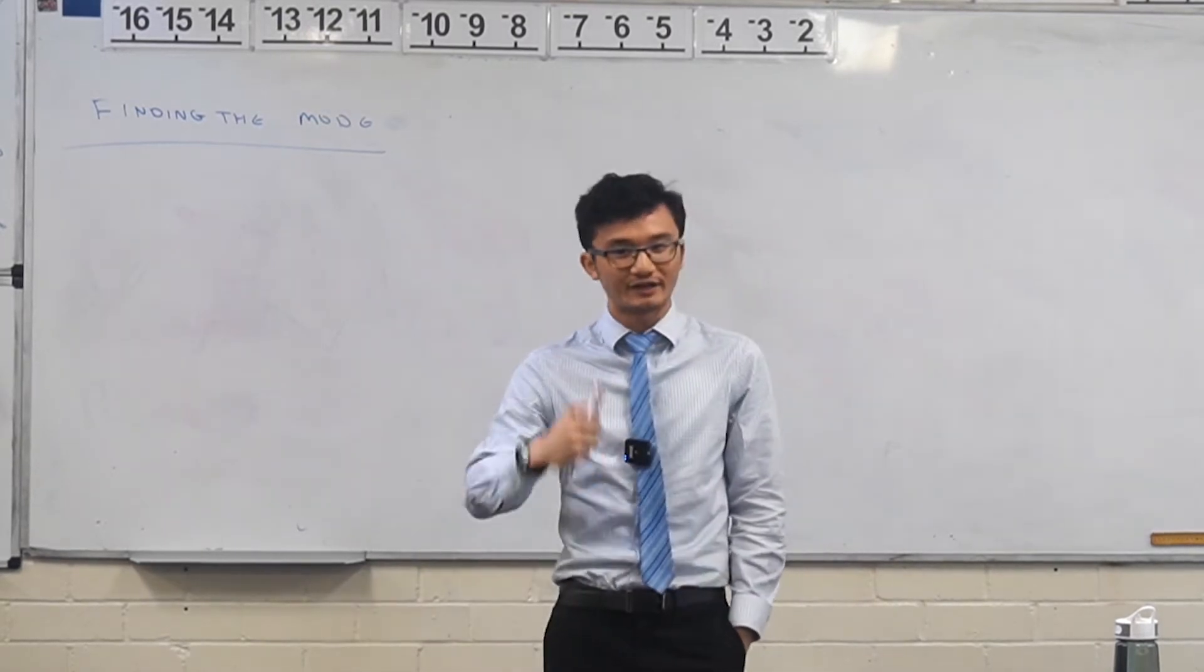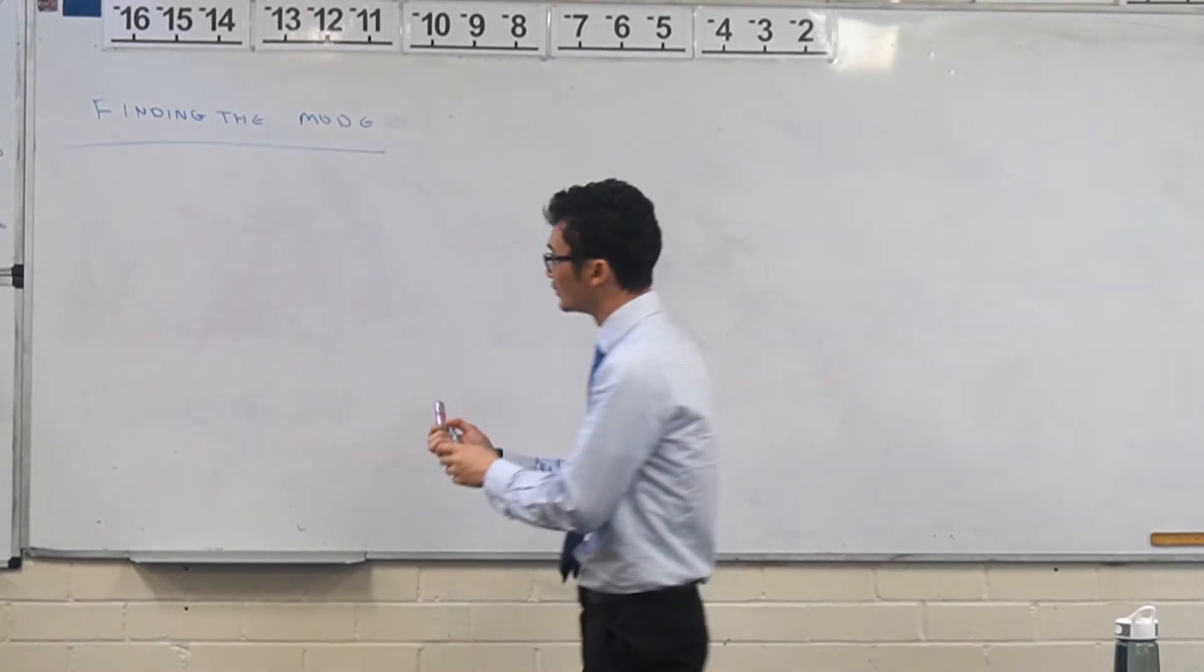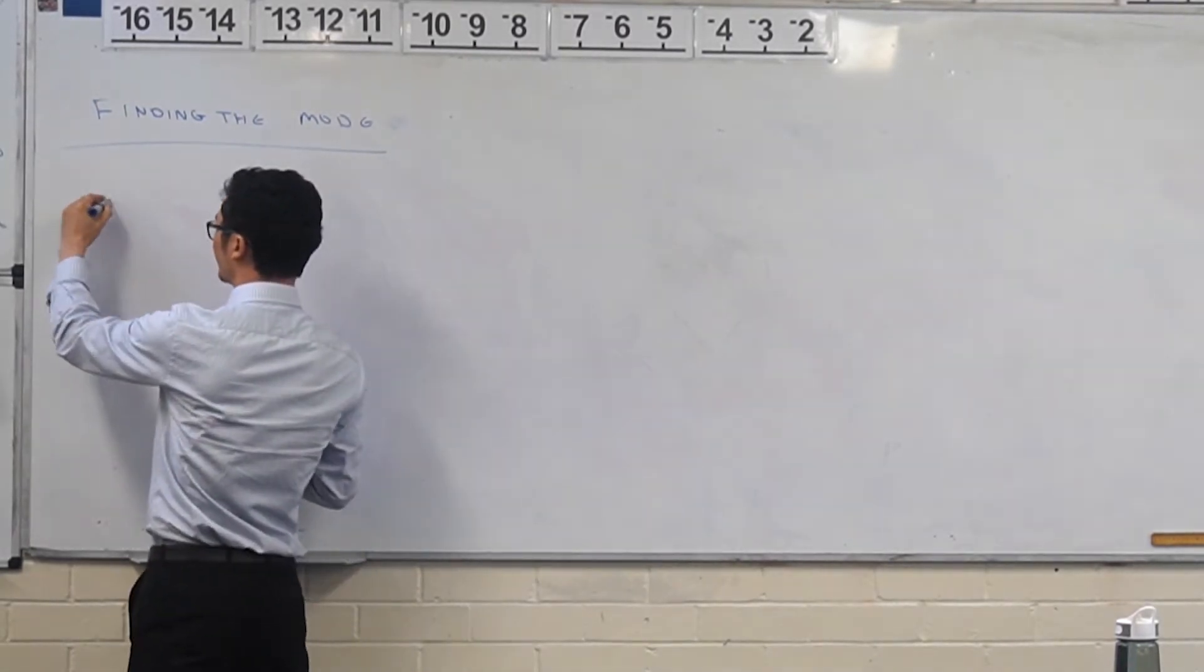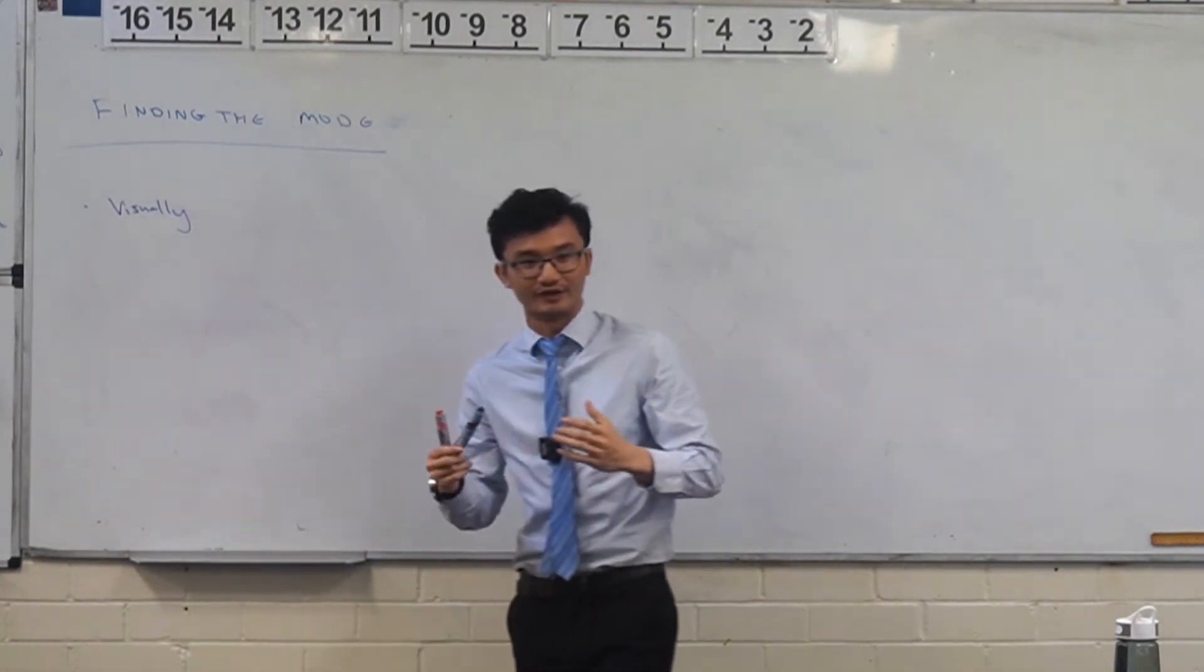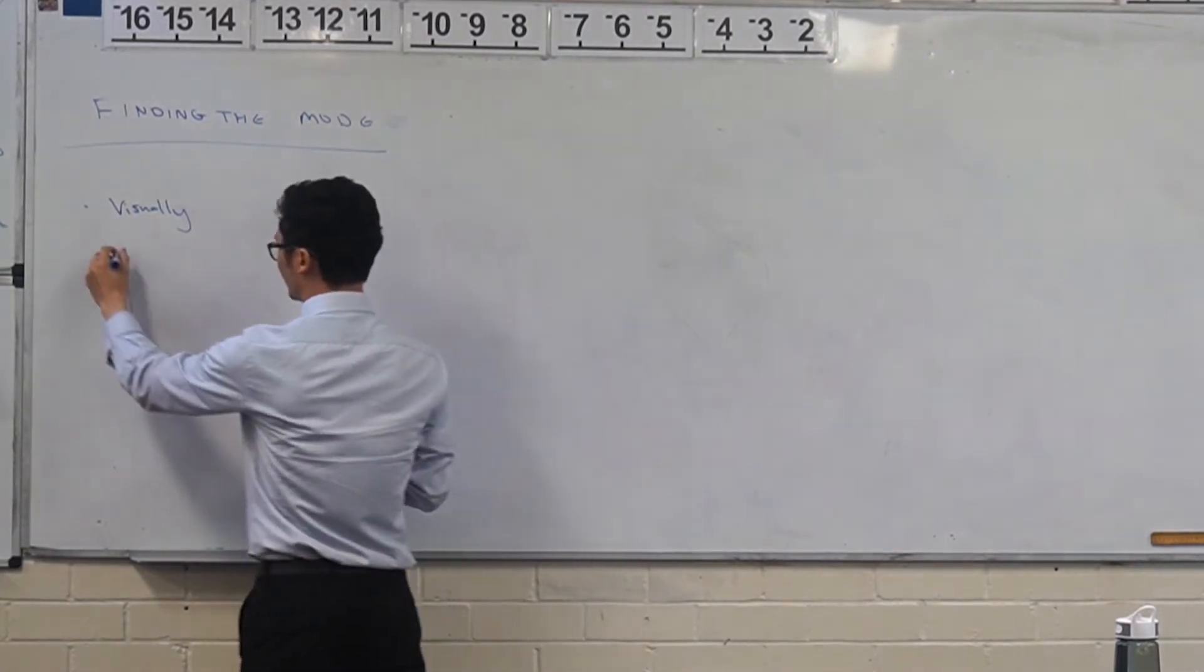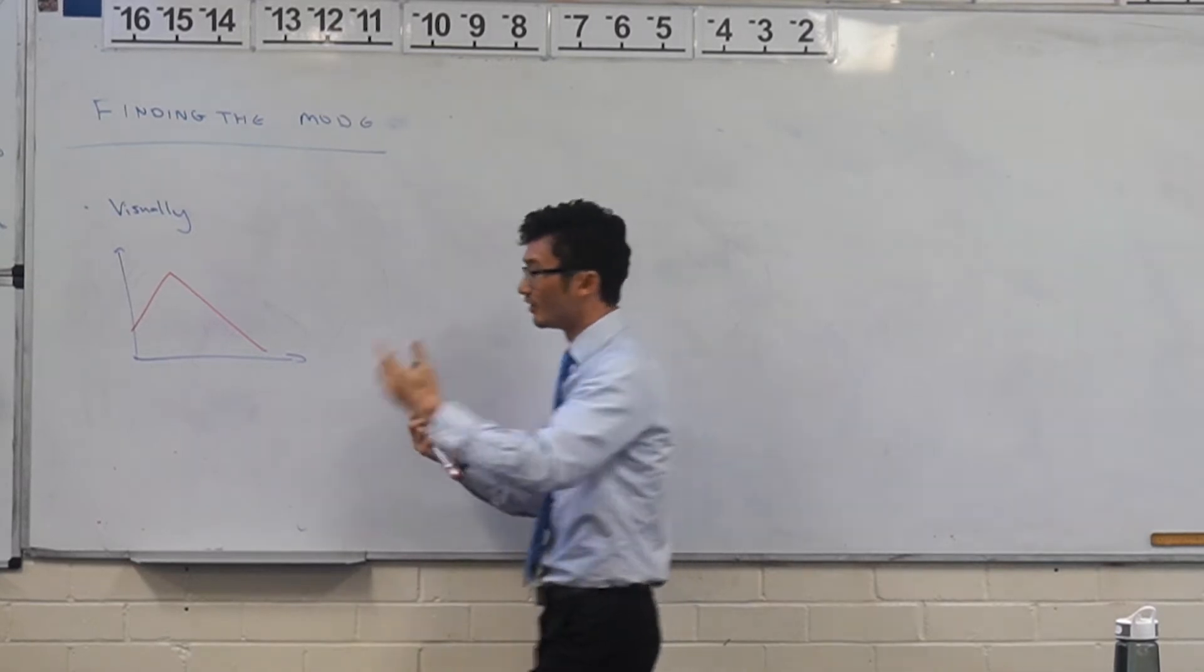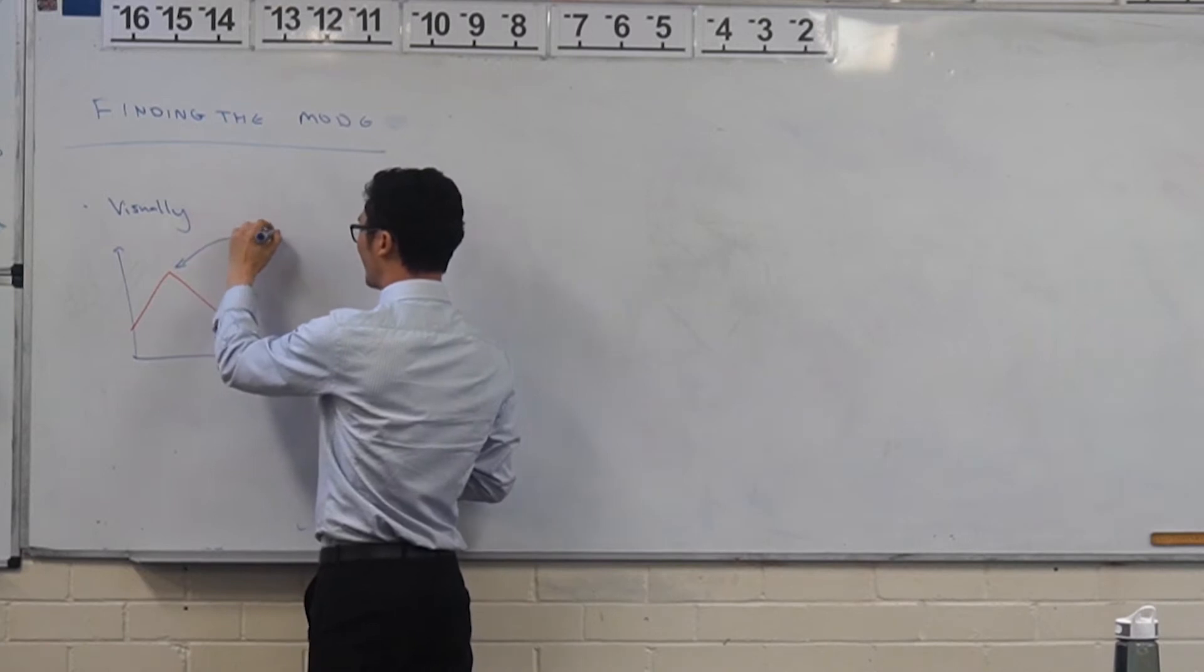But when we're talking about continuous random variables, we have a few different ways of doing that. To find the mode, the easiest way is visually. What does it look like visually to find the mode on a particular graph? If we have a PDF that looks like that, what is the mode of this? The highest point, right? The pointy point, the highest point. So it's the maximum value.